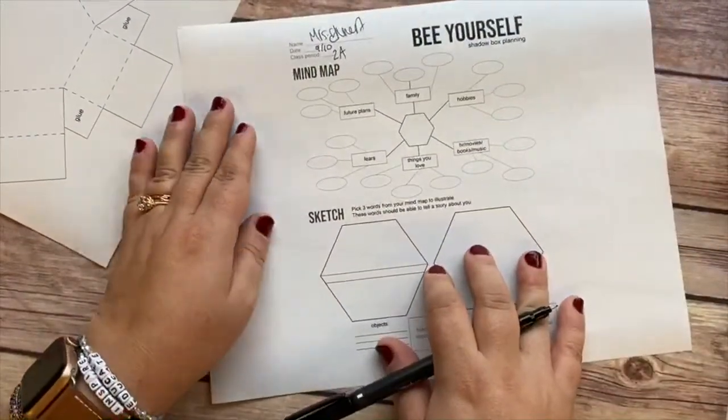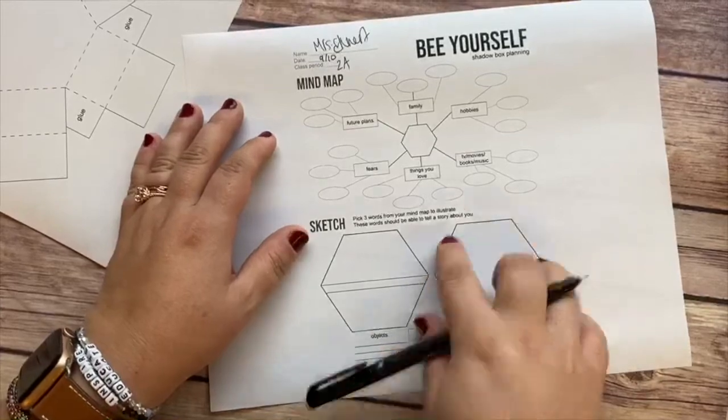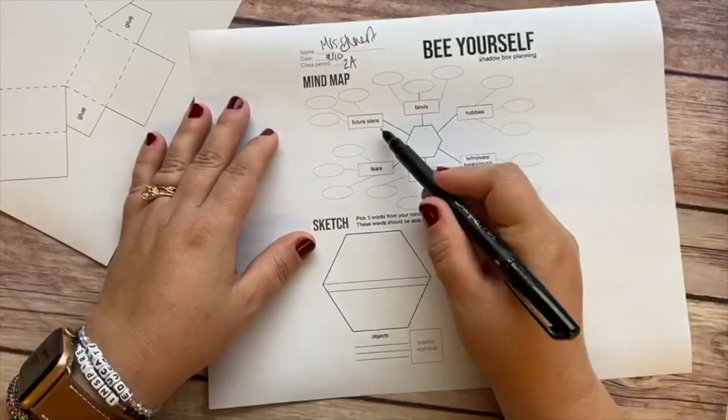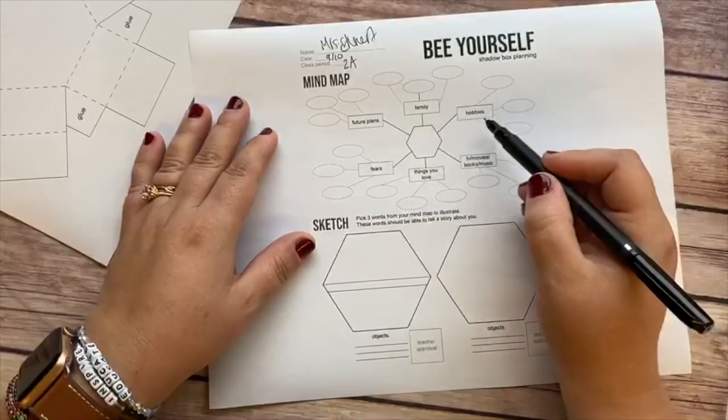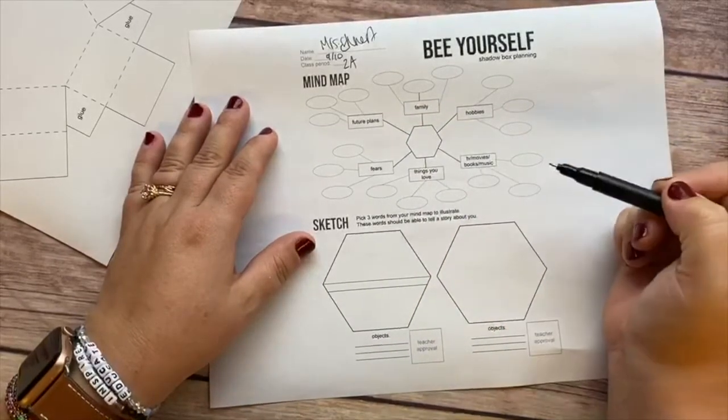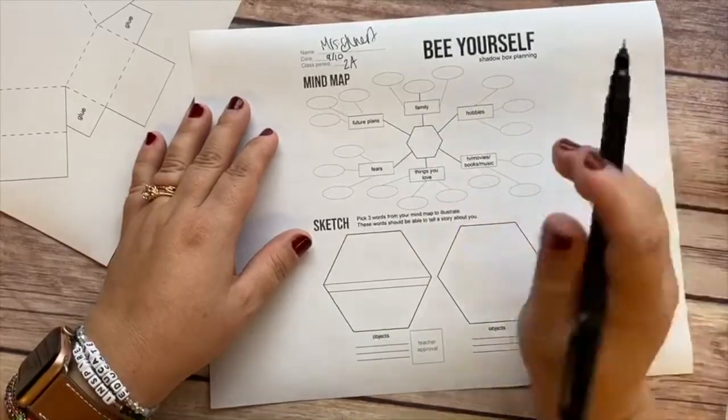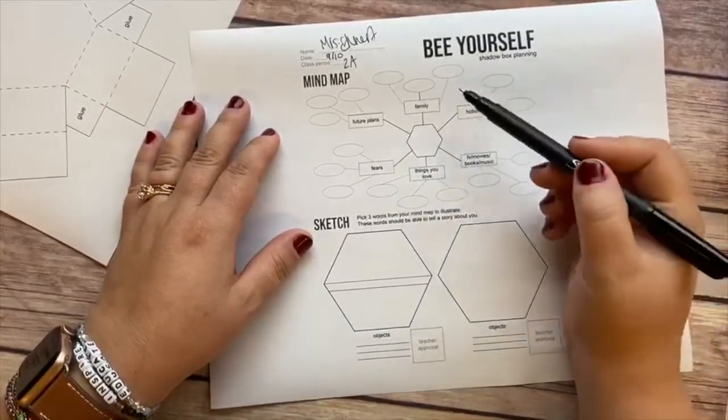You're going to fill out your mind map. I'm going to fast forward this quite a bit, but you'll see that you are going to include different things about yourself like future plans, family, hobbies, TV, books and music, movies as well, things you love, fears.